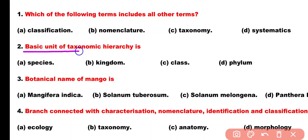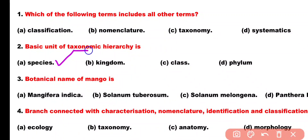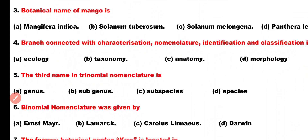Question number 2. Basic unit of taxonomic hierarchy is: Option A: Species, Option B: Kingdom, Option C: Class, Option D: Phylum. Correct answer is Option A. Species is the basic and simplest unit of taxonomic hierarchy.